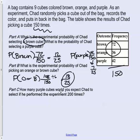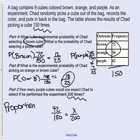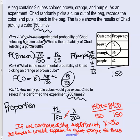How many purple cubes would you expect Chad to select if he performed the experiment 200 times? Now we need a proportion. Make sure you write this down. If he gets purple 42 out of 150 times, how many will he get it out of 200? Let's use algebra to help us solve this. So cross products. 150 times x would be 150x, and 42 times 200 gives us 8,400. So how do I get rid of the 150? If it's being multiplied, I have to divide both sides by the 150, and I get 56. So x equals 56. So we could predict, we can say, if we continued the experiment and we did it 200 times, we would expect to get purple 56 out of those 200 times.